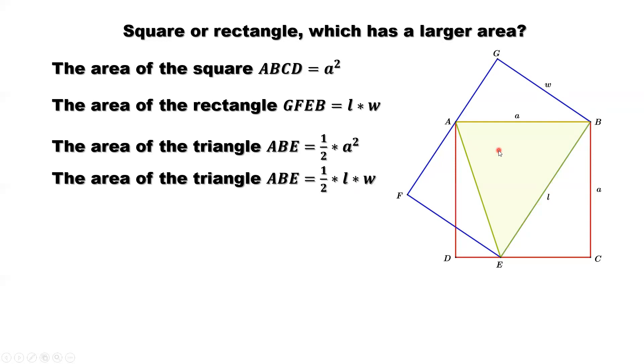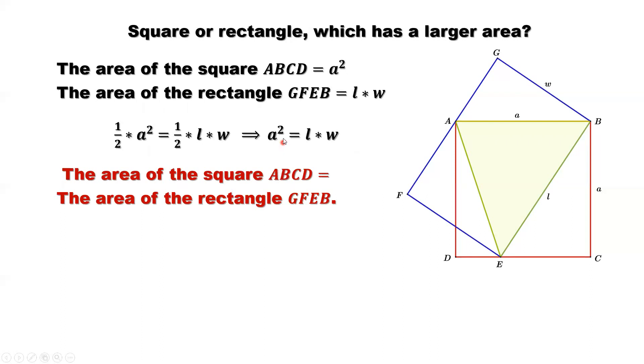We calculate the area of this triangle, the same triangle, in two different ways. Got two results. The two results should be the same because the triangle is the same. So this implies one half times A squared equals one half times L times W. We can get rid of one half on both sides. Both sides times two. We have A squared equals L times W.